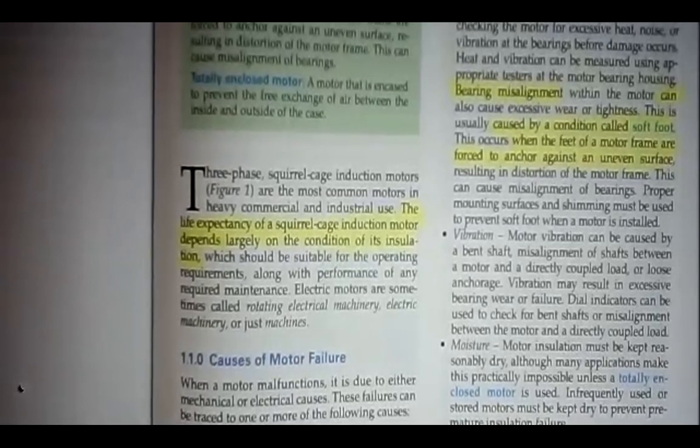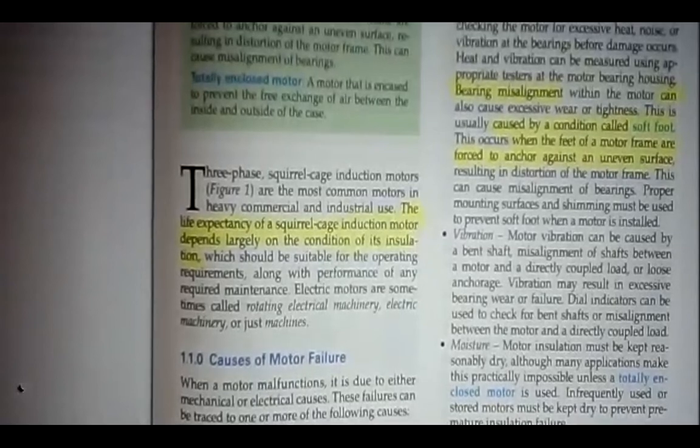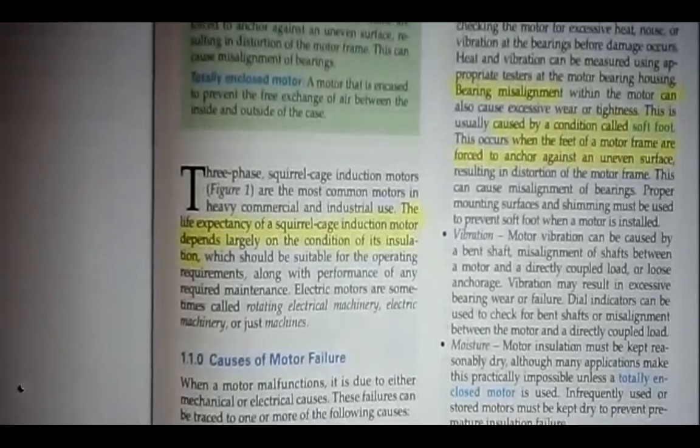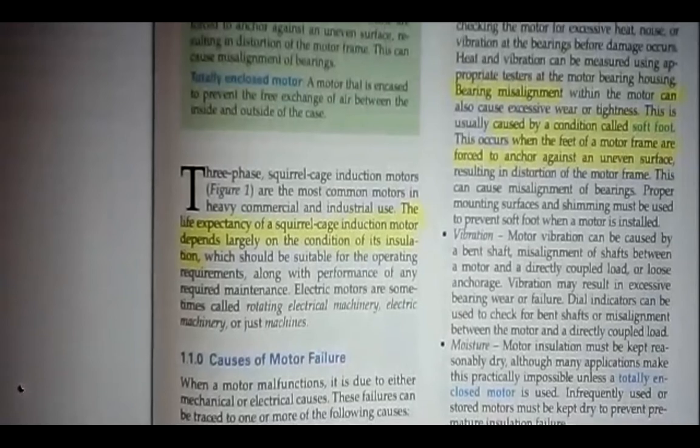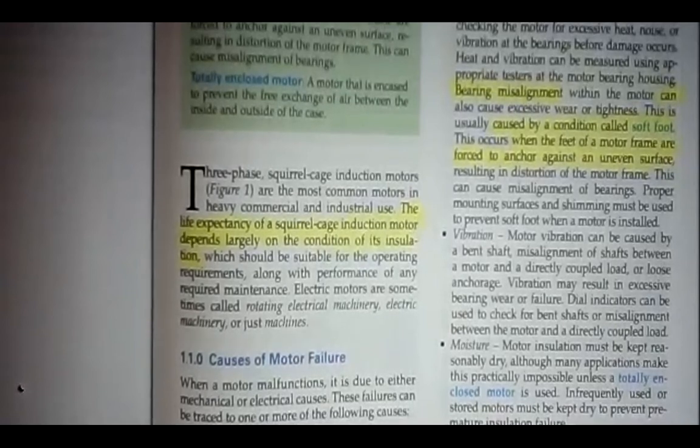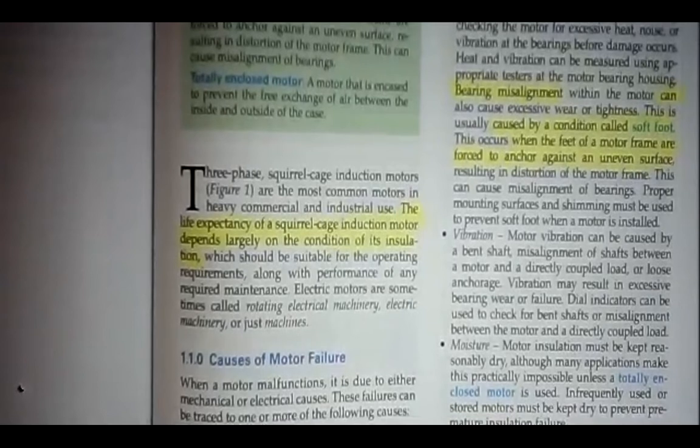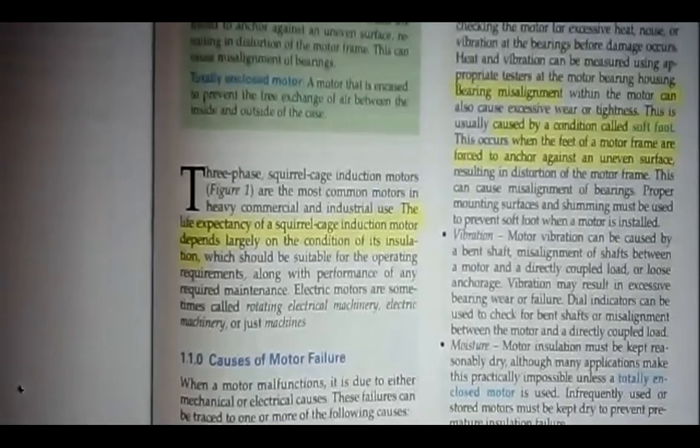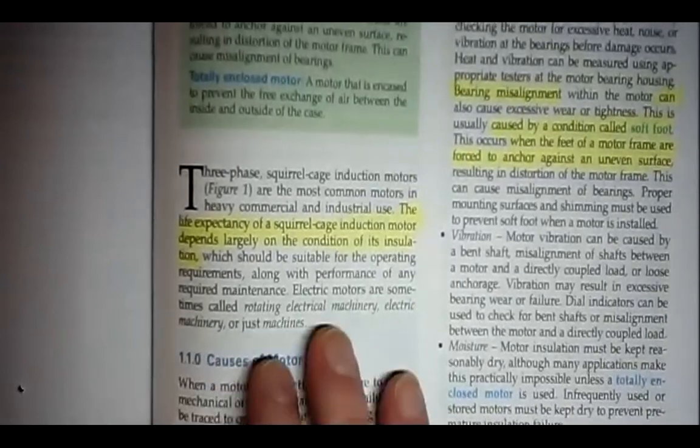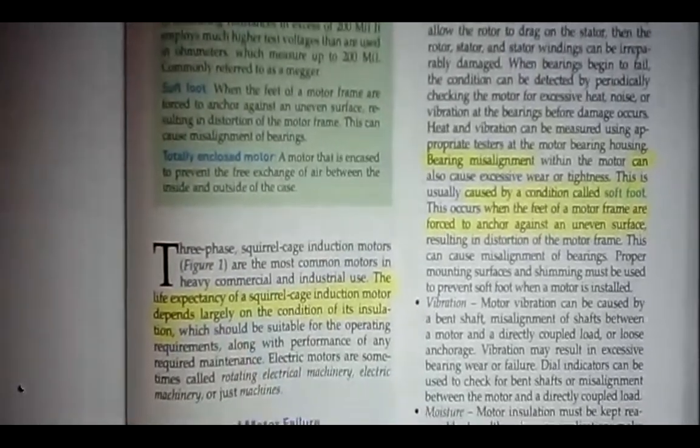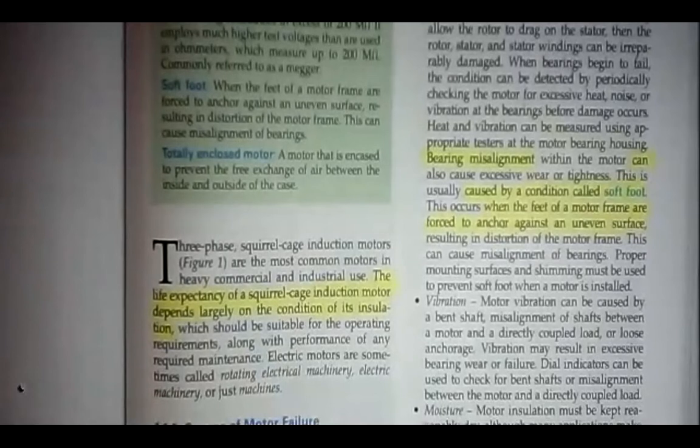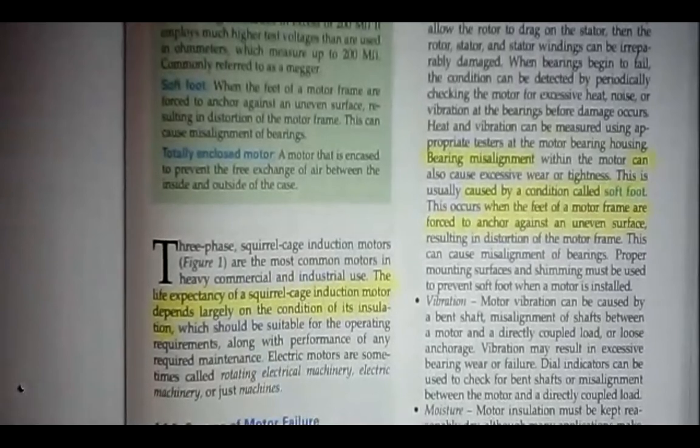That's what overloads are for. You have motors on a motor controller, motor starter, and it has a set of overloads. Those overloads are supposed to open the circuit and stop the motor from operating if the current is above a predetermined value. If it's going to cause too much heat, that will cause the insulation to become brittle on the windings of the motor. It only takes a little bit of over current to damage those windings.